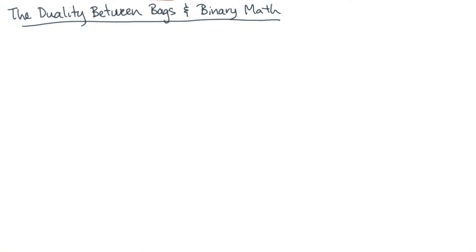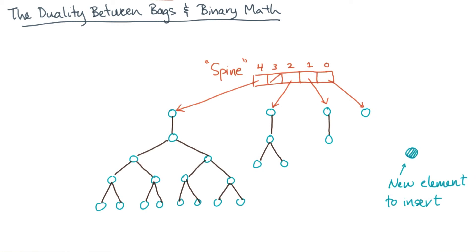Now, if you want to put a single element into a bag, you're going to do the morally equivalent thing to binary addition. Let's see an example. Suppose you have a bag with 23 elements and you want to insert a new element.